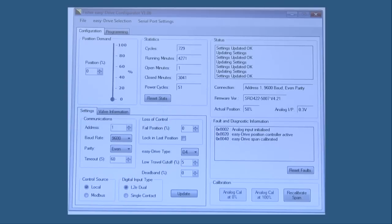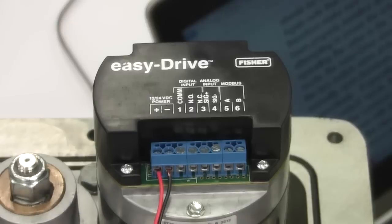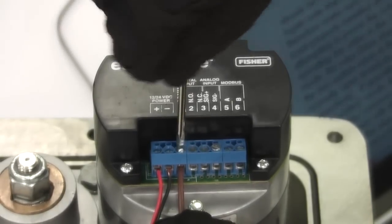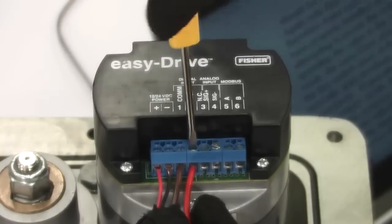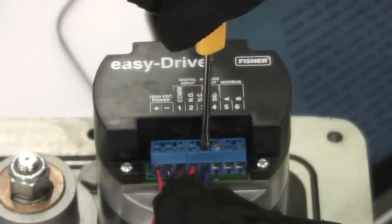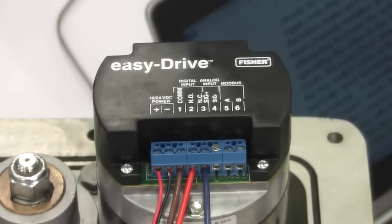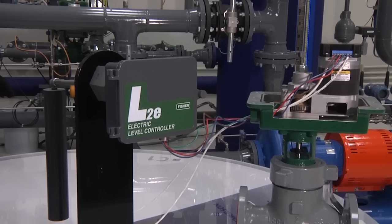The second type of on-off mode is the L2E dual dry contact mode. This uses the common, normally open, and normally closed terminals, which are terminals one, two, and three, respectively. We will use the Fisher L2E electric level controller to demonstrate this connection.